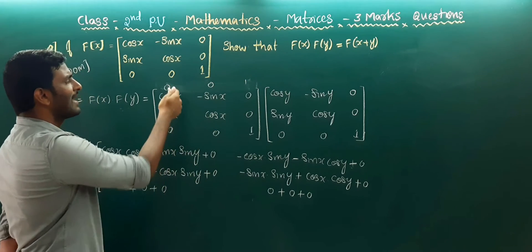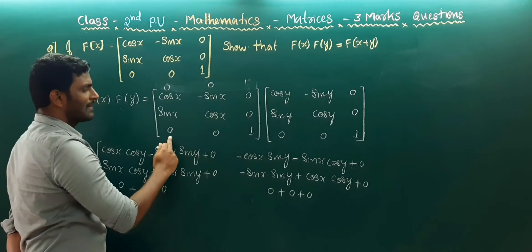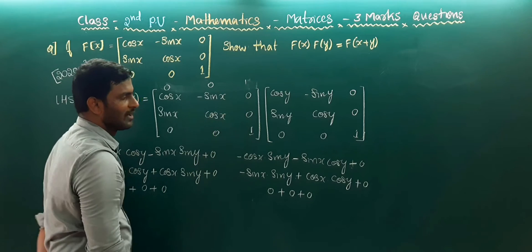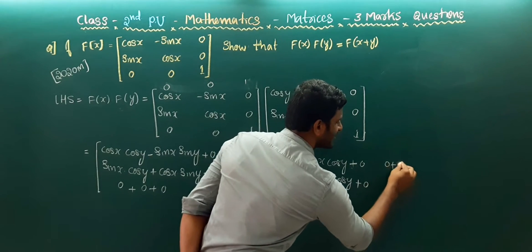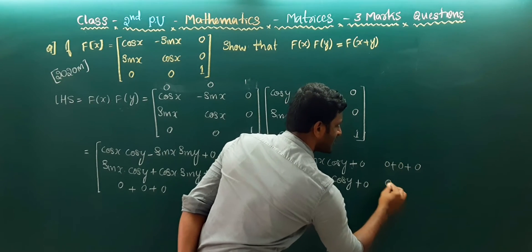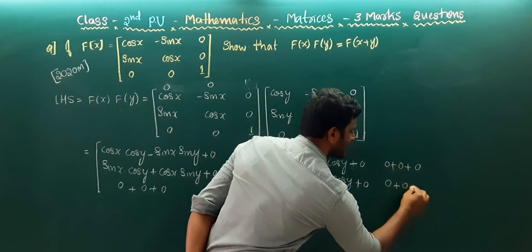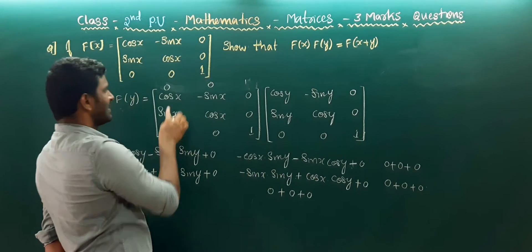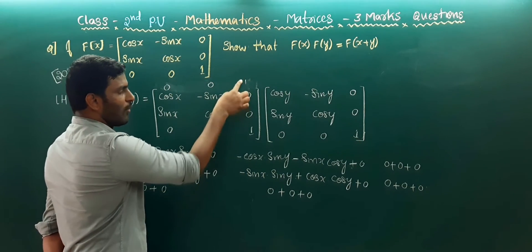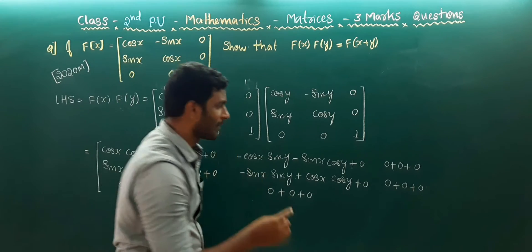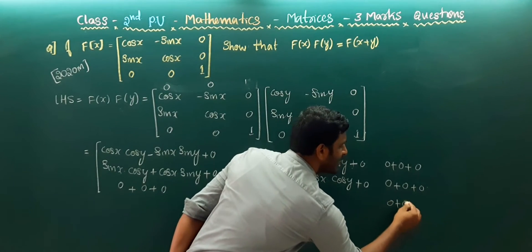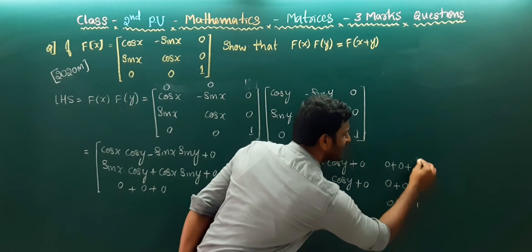And for the last column, whatever you have written in the corresponding row, if you are multiplying with 0 the whole element is 0, plus 0, plus 0. But the last element is 1 into 1, so the last element should be 1. So write it carefully — the last element is 1.